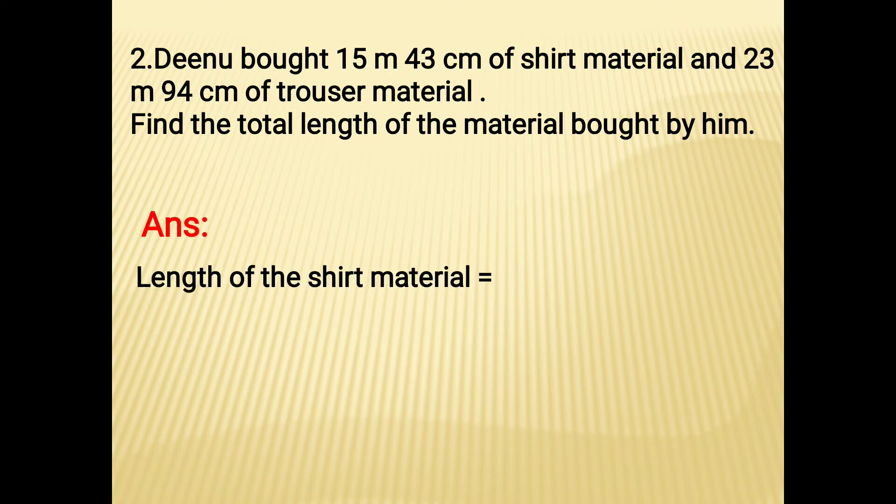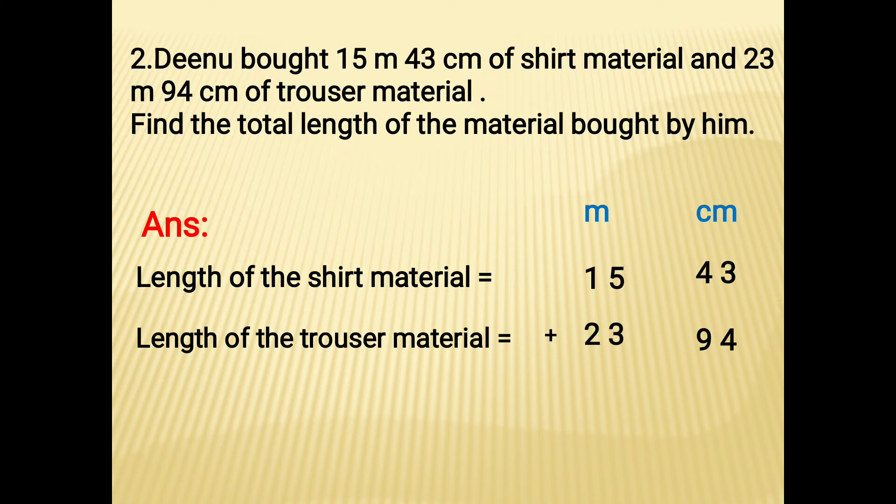Now write down the statement: length of the shirt material is 15m 43cm, length of the trouser material is 23m 94cm. Now add the values. In centimeter, 3 plus 4 is 7, 4 plus 9 is 13. 13 is a two-digit number, so 3 here and 1 goes to carry over. In meter, 5 plus 3 is 8, 8 plus 1 is 9, then 1 plus 2 is 3. Therefore the total length of material is 39m 37cm.